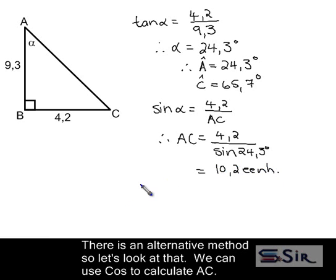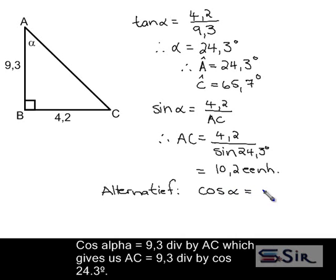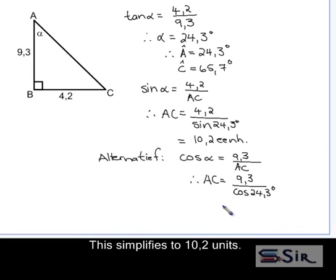There is an alternative method, so let's look at that. We can use cos to calculate AC as well. Cos of alpha is equal to 9.3 divided by AC, which gives us AC equaling 9.3 divided by cos of 24.3 degrees. And this simplifies using our calculator to 10.2 units.